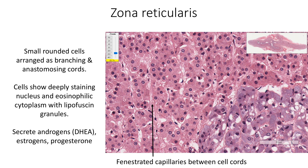Zona reticularis is the innermost zone of the cortex. It is made up of small rounded cells arranged as branching and anastomosing cords, which almost form a network or reticulum — hence the name zona reticularis. These cells show deeply staining round nuclei and eosinophilic cytoplasm containing smooth endoplasmic reticulum, mitochondria with tubular cristae, lysosomes, and lipofuscin granules which increase with age. These cells secrete androgens as well as estrogen and progesterone. Between the cell cords, we find fenestrated capillaries.